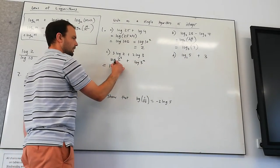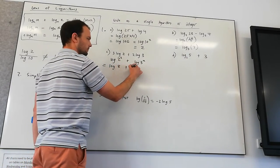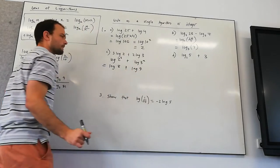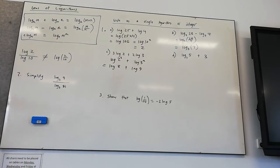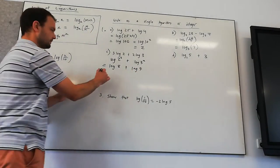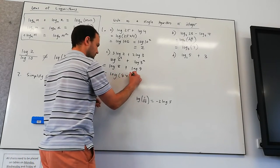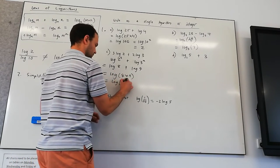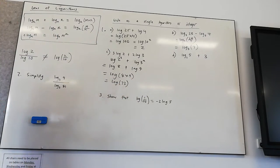2 log of 3 becomes log of 3 squared. Let's simplify those, so we'll have log of 8 plus log of 9. They're both in base 10, so now we can collect them. We'll have log of 8 times 9, log of 72. And we can't simplify it any further.